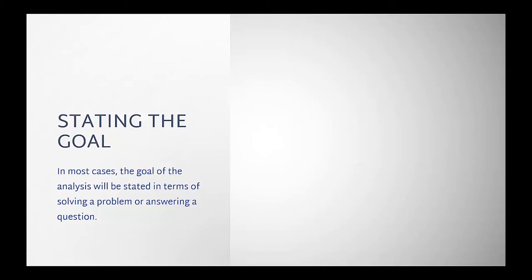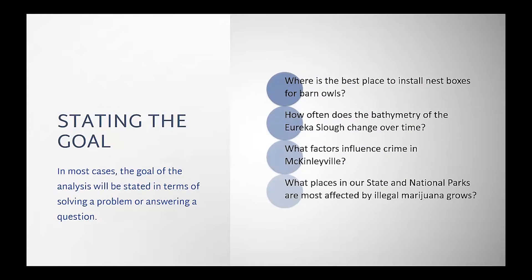The following are some examples of problems with a geospatial component: Where is the best place to install nest boxes for barn owls? How often does the bathymetry of the Eureka Slough change over time? What factors influence crime in McKinleyville? What places in our state and national parks are most affected by illegal marijuana grows?